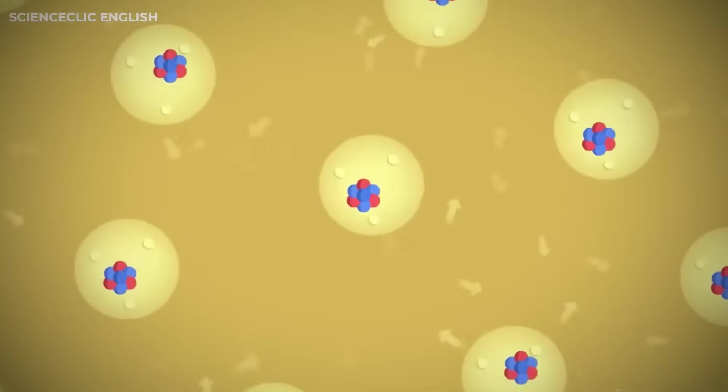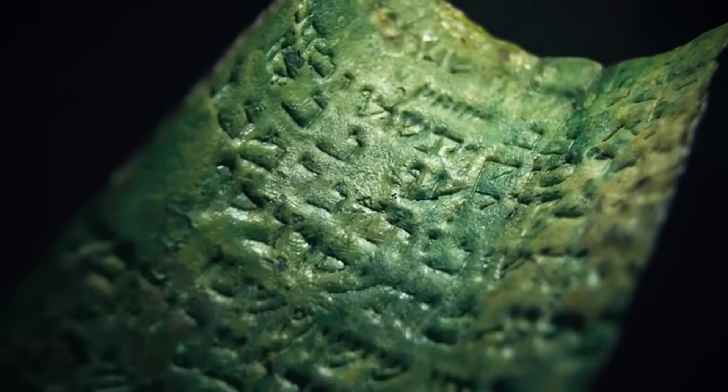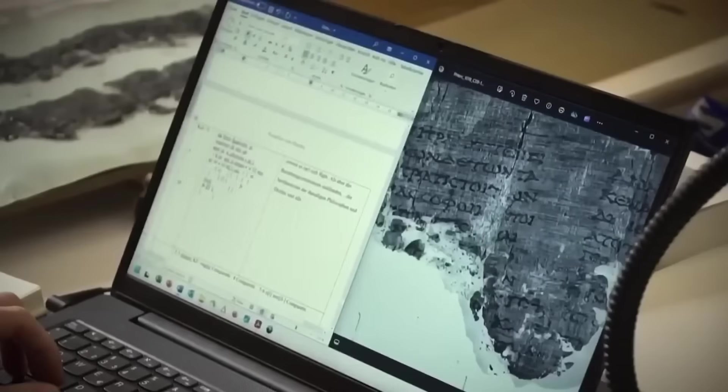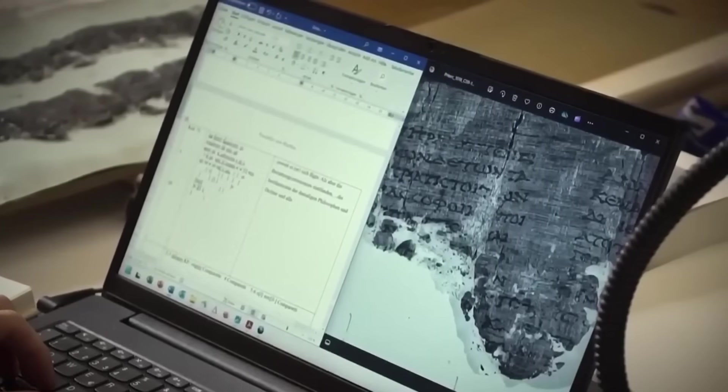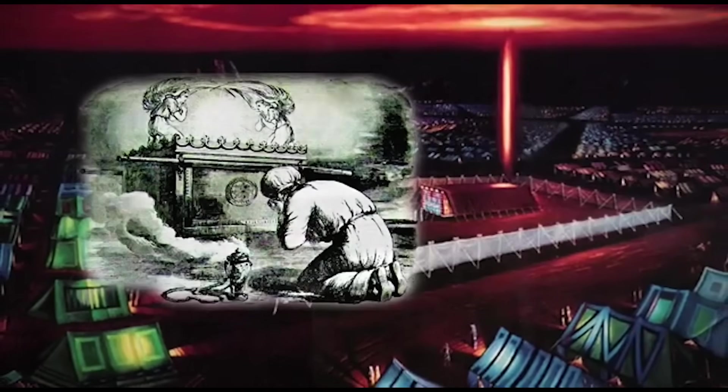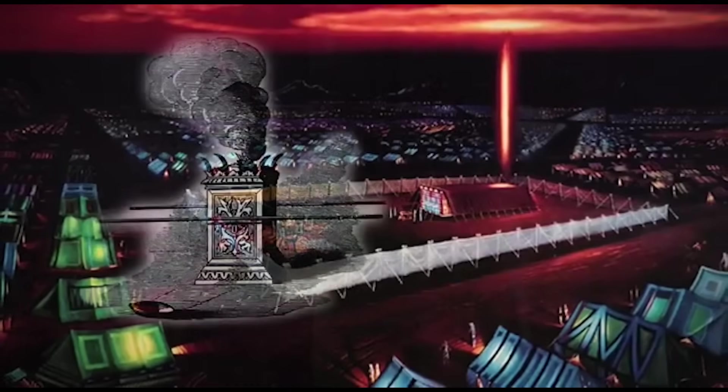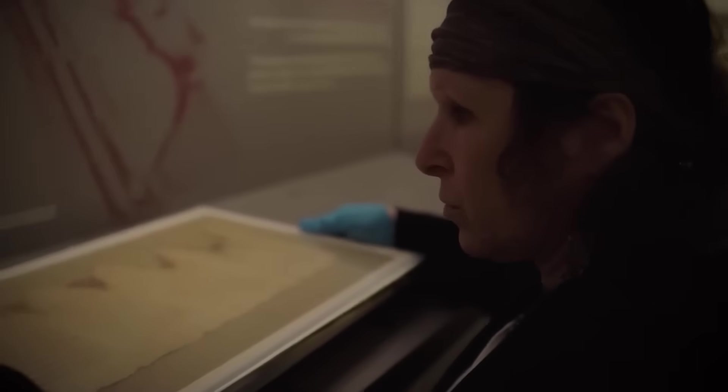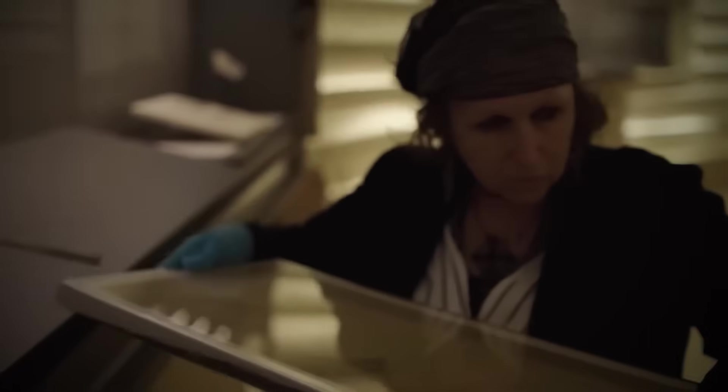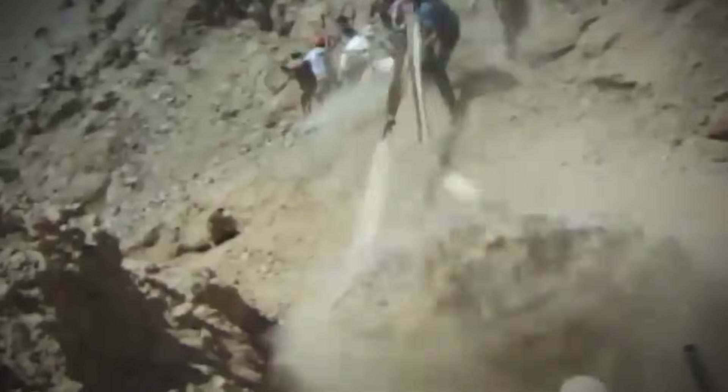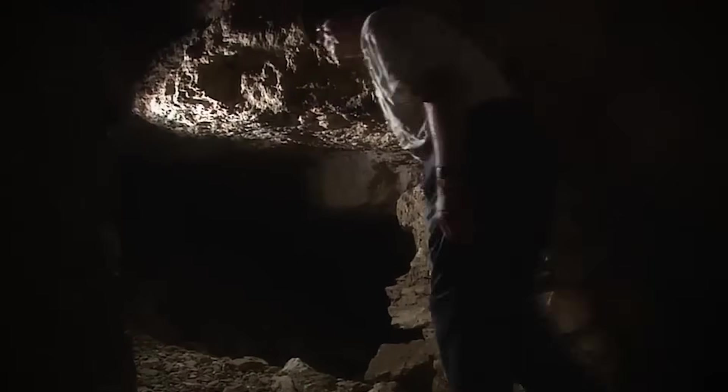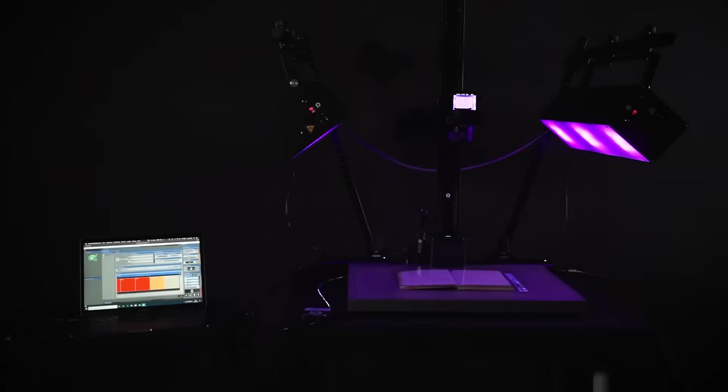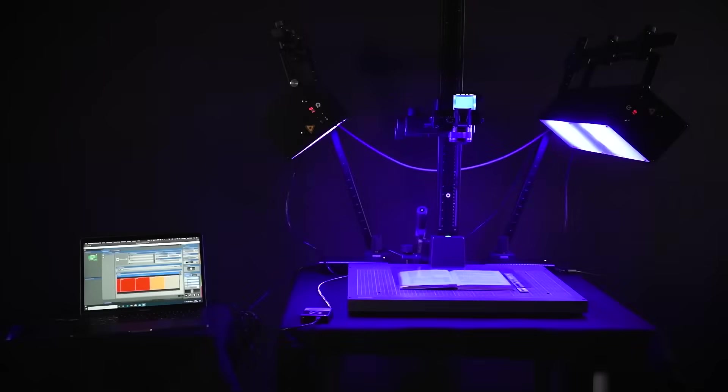Let us know in the comments before we reveal what researchers are planning next. To fully appreciate this discovery, we need to understand what makes the copper scroll unique among the Dead Sea Scrolls. Discovered in 1952 in Cave 3 near Qumran, this brittle copper document stood out immediately. While other scrolls were written on parchment or papyrus, this one was literally engraved on metal. The scroll was so corroded that researchers couldn't unroll it without destroying it. They had to cut it into strips just to read the text. What they found wasn't religious teachings or biblical passages. Instead, they discovered what amounts to an ancient treasure map. The copper scroll lists 64 hiding locations for massive quantities of gold and silver. We're talking tons of precious metals. A king's ransom.